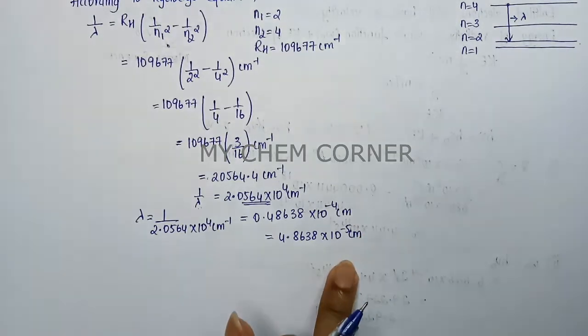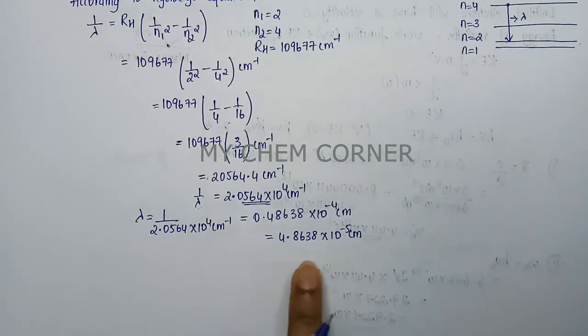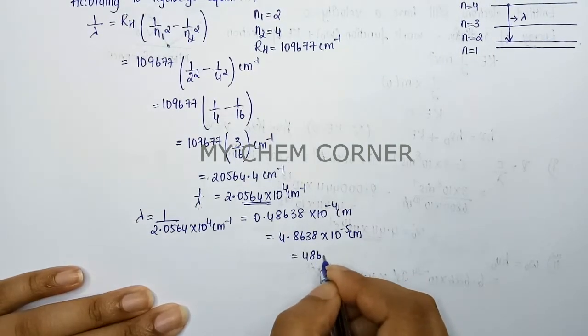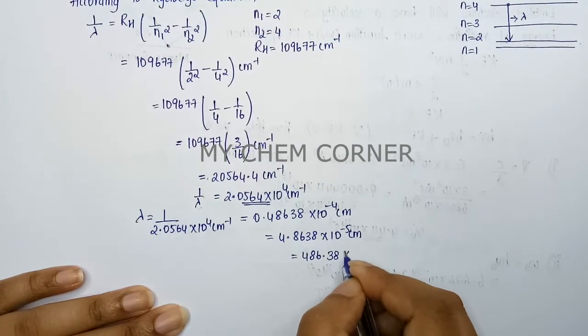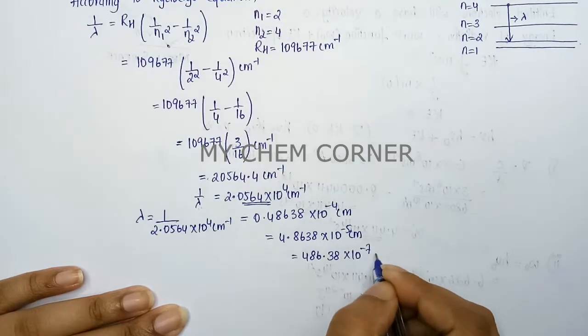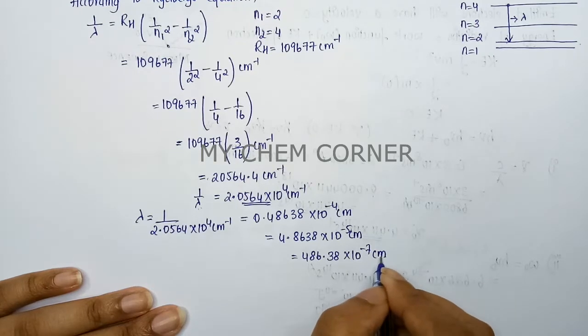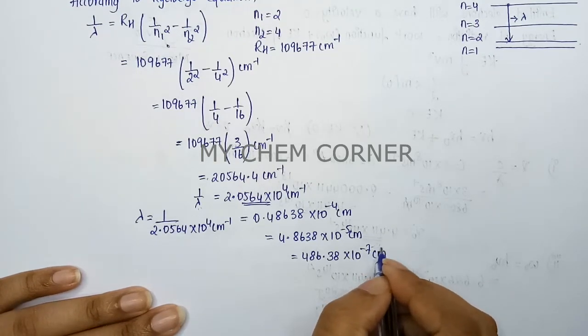This is in terms of cm. We will shift 2 more decimals, which will be 486.38×10⁻⁷ cm.